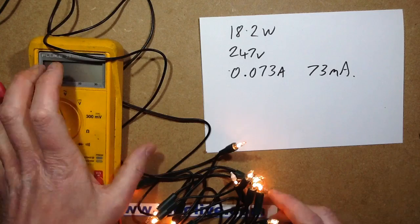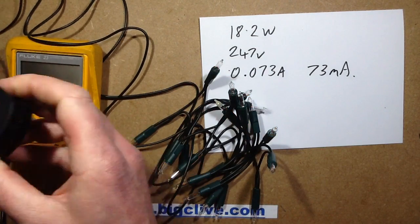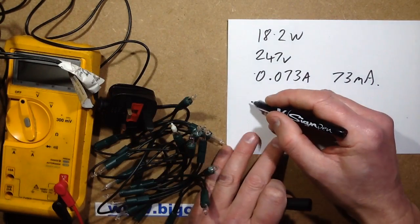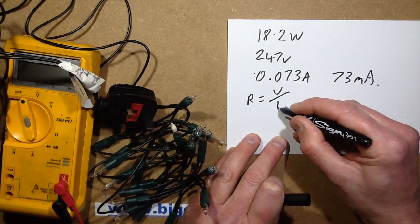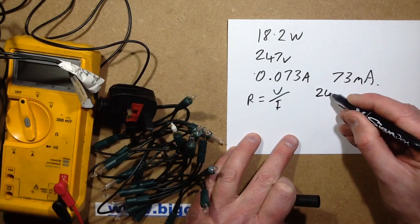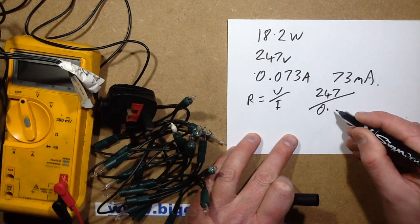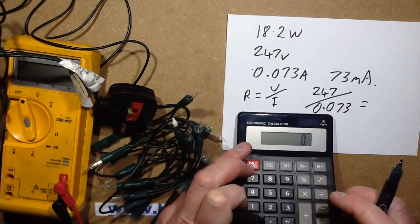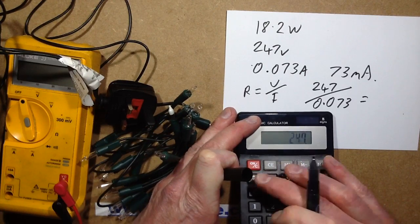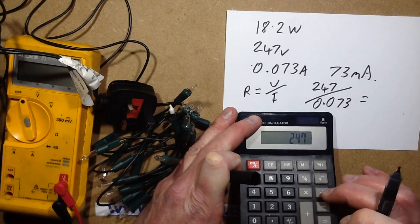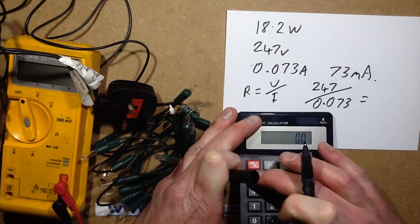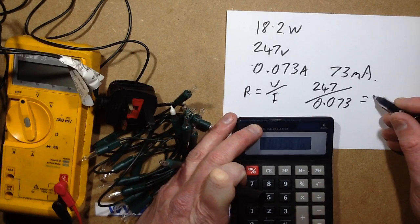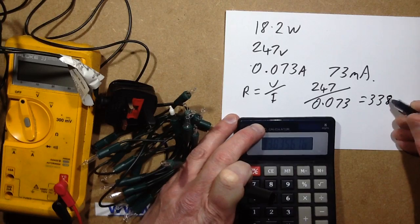Okay, so the first thing. I'll unplug these. And based on that, you'd expect the resistance of the string. R equals V over I. So you'd expect it's going to be 247 volts divided by 0.073 equals, so that's 247 volts divided by 0.073 equals. So you'd expect the resistance to be 3,383 ohms.